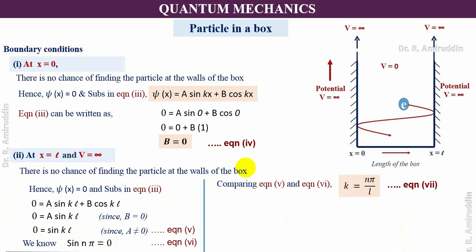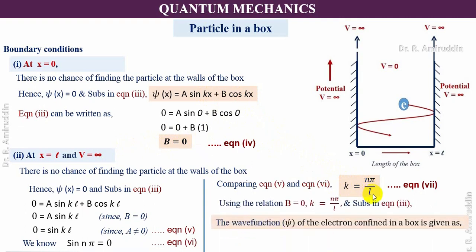Using B = 0 and k = nπ/L, we substitute into equation three: ψ(x) = A sin(kx) + B cos(kx). Finally, the wave function of the electron confined in the box is ψ(x) = A sin(nπx/L), since B = 0.